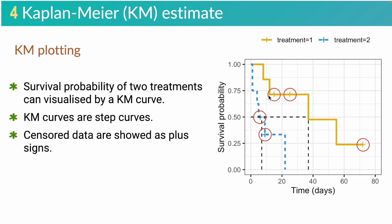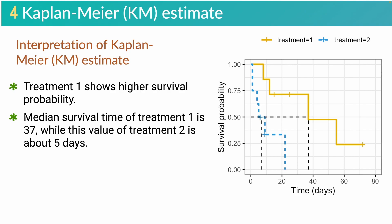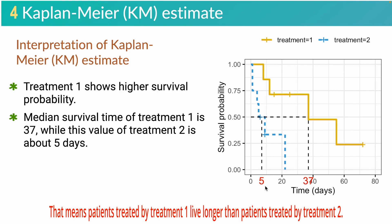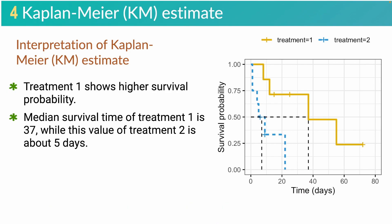For example, this is the previous event of these two censored data points. After you have the KM curve, you need to interpret the meaning of the results. In this study, KM estimates show that treatment 1 has higher survival probability than treatment 2. The median survival time — the length of time in which half of the patients died — for treatment 1 is 37, while this value for treatment 2 is 5. That means more patients survive in treatment 1 than treatment 2. The Kaplan-Meier curve gives you an intuitive visualization of how different the two treatments are.